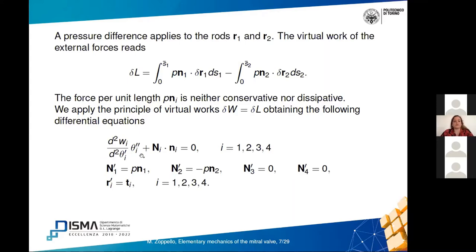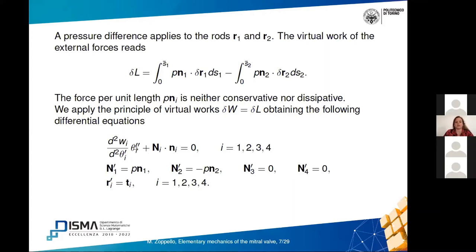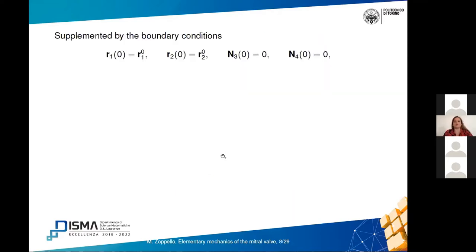We end up with a system of equations: four second-order equations for θ_i involving both θ and N (the tension of the rods), four first-order equations for the tensions along each rod, and four first-order equations for the inextensibility constraints. The overall system is composed of 16 first-order equations in phase space, supplemented by boundary conditions.